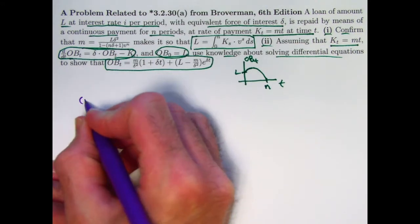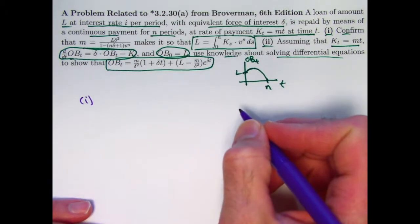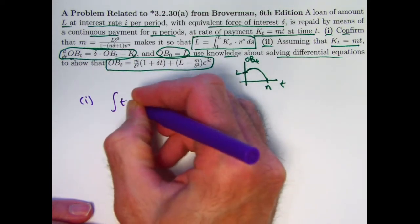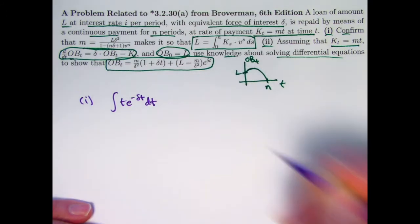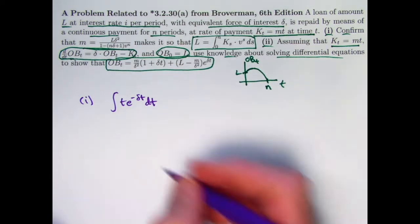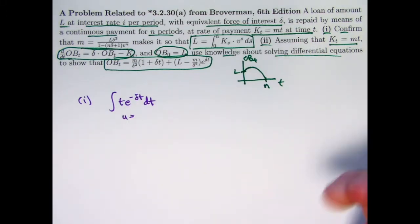But now let's do the problem at hand. Before confirming this in part one, let's do an antiderivative. A helpful indefinite integral that's going to help us in a couple spots on this problem is to integrate T times E to the negative delta T. And you'd want to do that by parts. I'd encourage you to maybe pause the video and try it on your own.